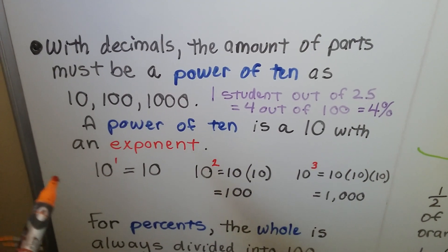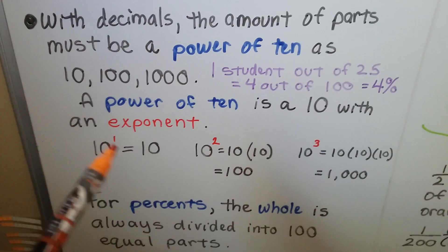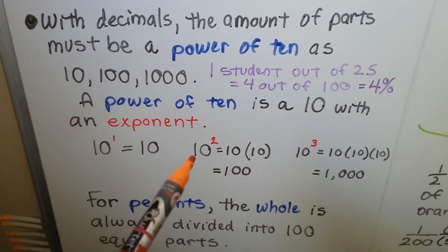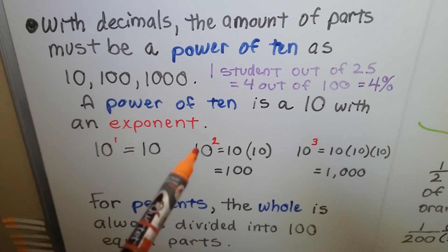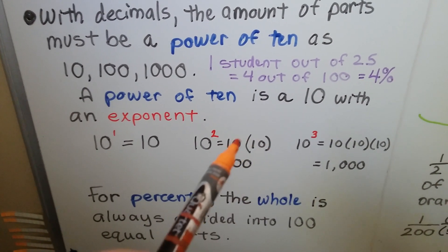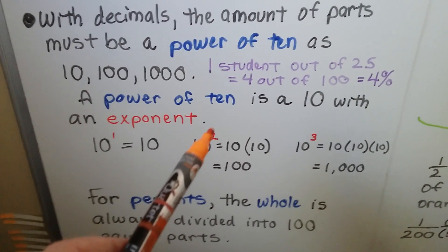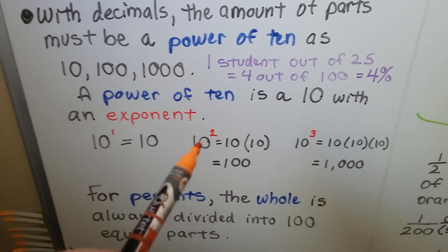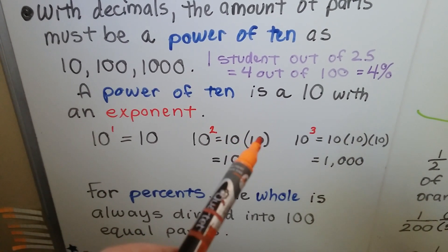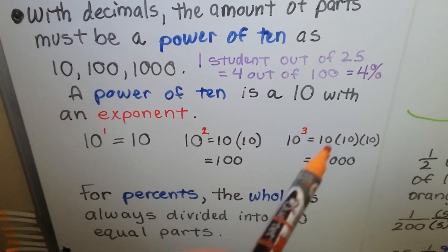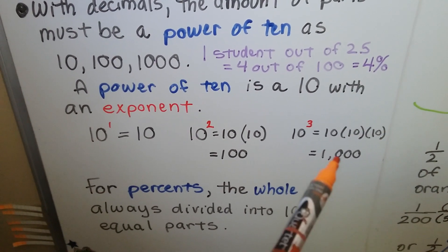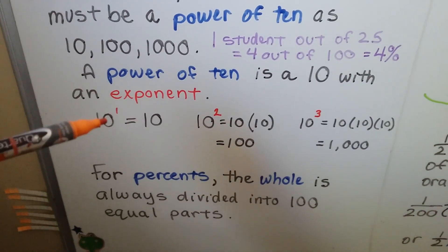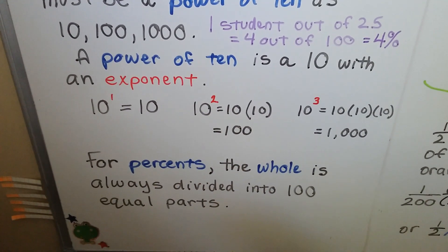A power of 10 is a 10 with an exponent. So 10 to the first power is just 10. 10 to the second power means 10 times 10, it doesn't mean 10 times 2. It means how many times you multiply 10 to itself. If you have a little 3 exponent, then that's 10 times 10 times 10, that would be 1000. So those are powers of 10. Anytime you see powers of 10, it means 10 with a little exponent, a power.